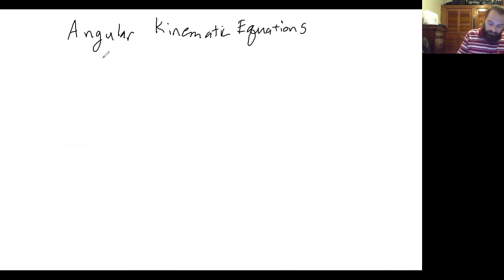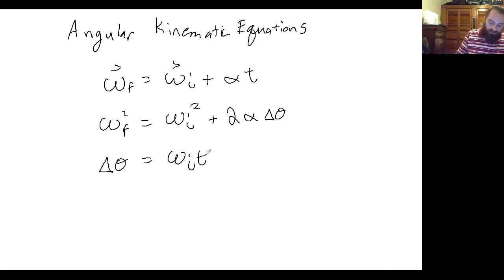Look like this. So we've got omega final equals omega initial plus alpha t. Omega final squared equals omega initial squared plus two alpha delta theta. And delta theta equals omega initial t plus one half alpha t squared.